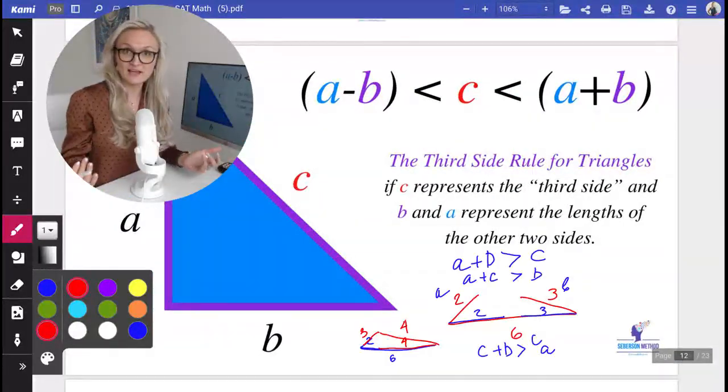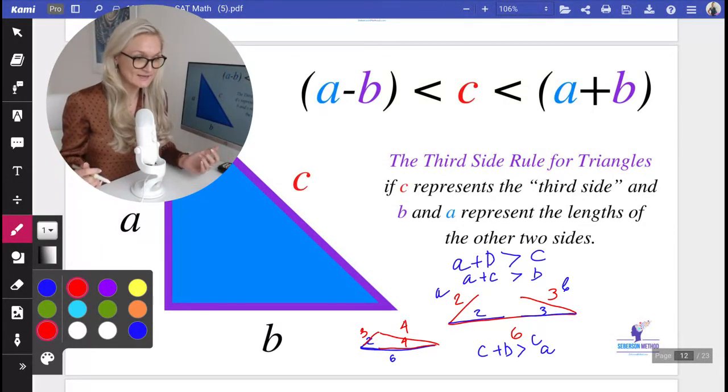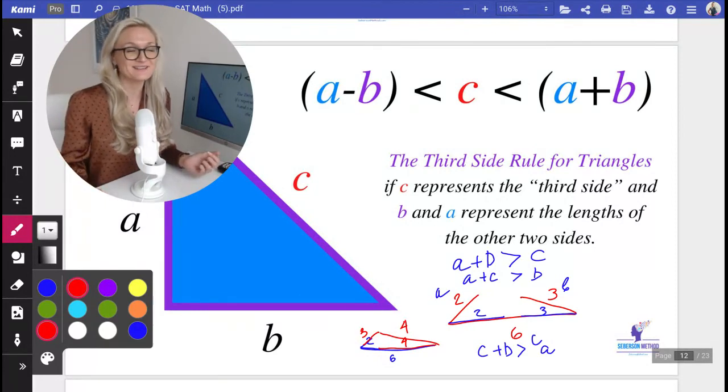So the difference between a and b is going to be less than c, and c is just the third side, and then c is going to be less than the sum. Just keep that in mind.